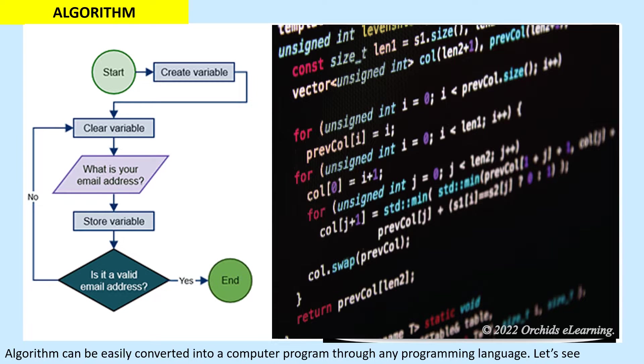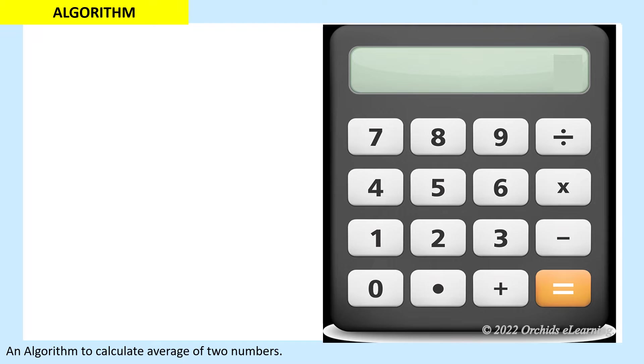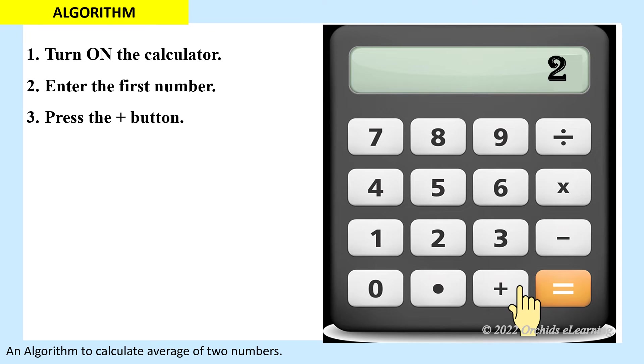Let's see an algorithm to calculate the average of two numbers. Turn on the calculator. Enter the first number. Press the plus button.